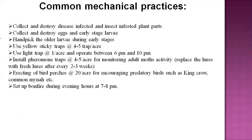Now for common mechanical practices: manually collect and destroy infested plant parts. If the plant has eggs, larvae, or egg masses, immediately remove and destroy them. For older larval stages, hand picking with labor should be done. Use yellow sticky traps or blue sticky traps at the rate of four to five traps per acre to minimize sucking pests like thrips.